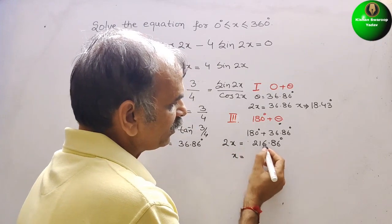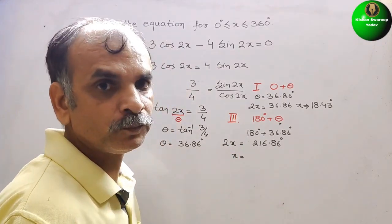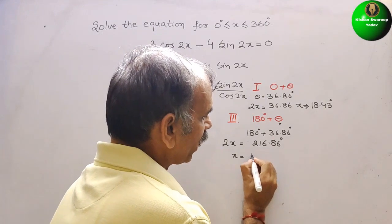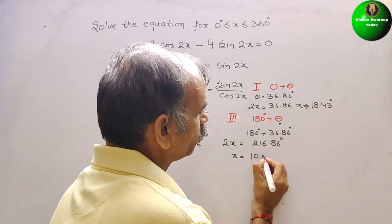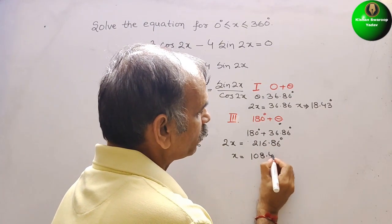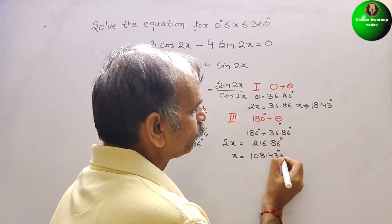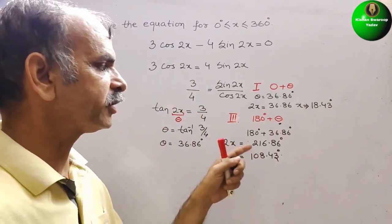So now this is 2x. So x is, just divide it by 2. We will get 108.43 degree. This is your second solution.